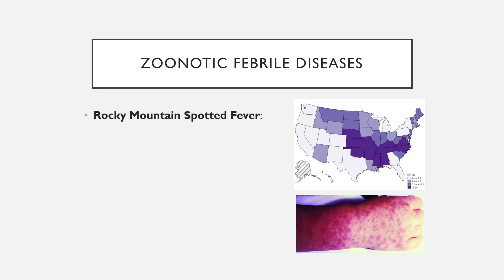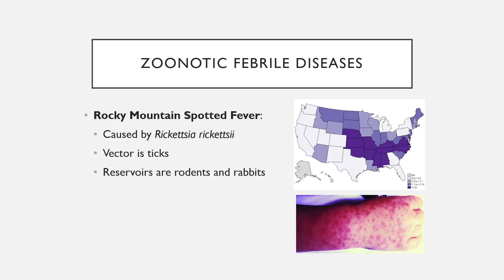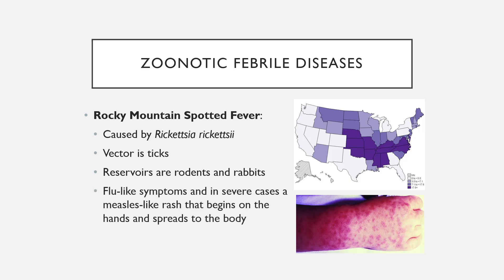Rocky Mountain spotted fever is caused by Rickettsia rickettsii — an intracellular bacterial pathogen that invades cells to cause disease. The vector is ticks and the reservoir is rodents and rabbits. Despite its name, it is commonly seen in the southeastern United States and Midwest, not the Rocky Mountain states. Symptoms include flu-like illness and in severe cases a measles-like rash that begins on the hands and spreads to the rest of the body. When treated with antibiotics, the mortality rate is about 3%.